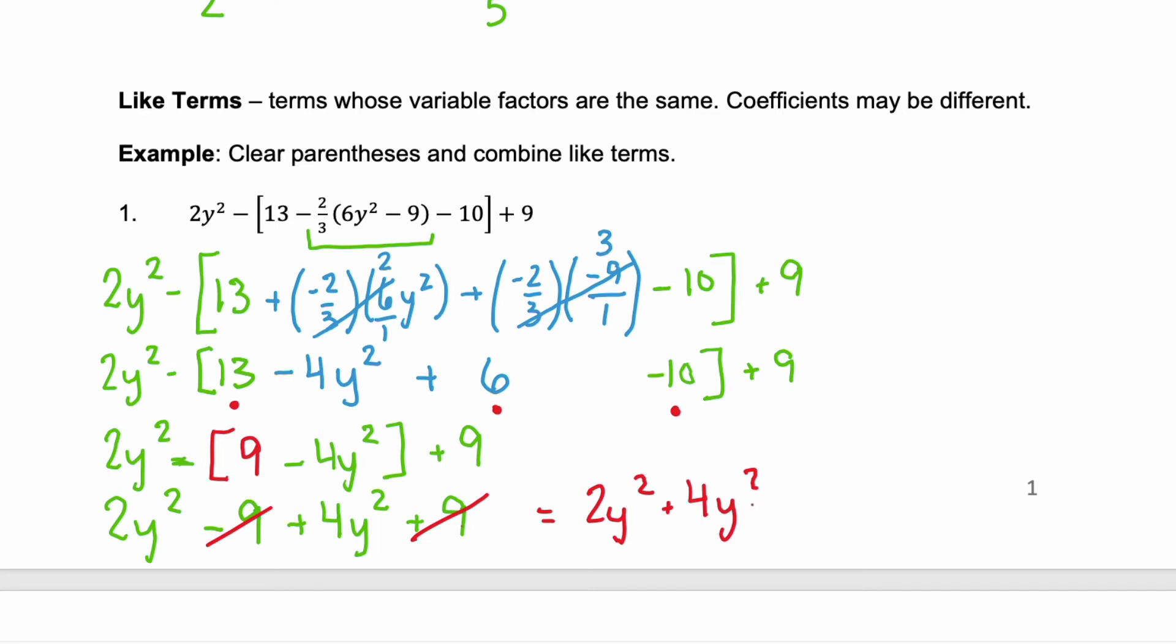That leaves 2y squared plus 4y squared. Notice that these are like terms. They both have the same variable factor, y squared. The first one, we have 2 of these y squareds. And the second one, we have 4 of these y squareds. So we add those together to get a final answer of 6y squared.